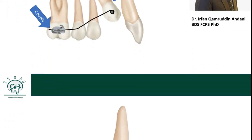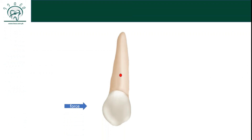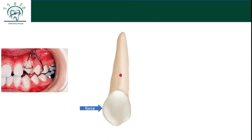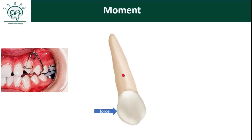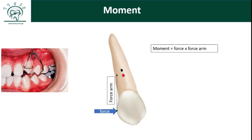We all know that whenever you apply force at a single point away from the center of resistance — like with a removable appliance — there is creation of moment, which is rotation of the tooth around a center known as the center of rotation, located slightly apical to the center of resistance. To calculate the moment, you multiply force magnitude by the force arm, which is the distance from the point of application to the center of resistance. This is simple tipping, in which you have no control over the root.